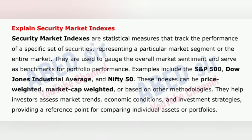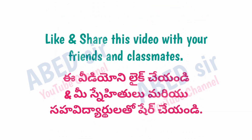Next important short question is: Explain security market indexes. Security market indexes are statistical measures that track the performance of a specific set of securities representing a particular market segment or the entire market. They are used to gauge overall market sentiment and serve as benchmarks for portfolio performance. Examples include the S&P 500, Dow Jones Industrial Average, and Nifty 50. These indexes can be price-weighted, market-cap weighted, or based on other methodologies, helping investors assess market trends, economic conditions, and investment strategies.